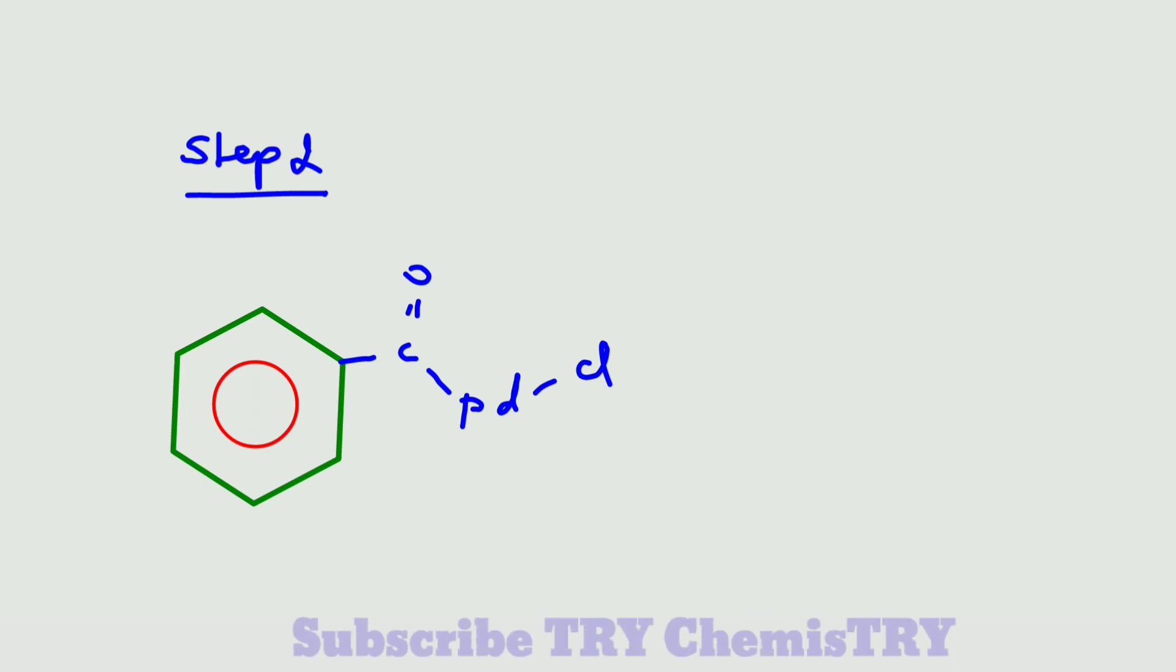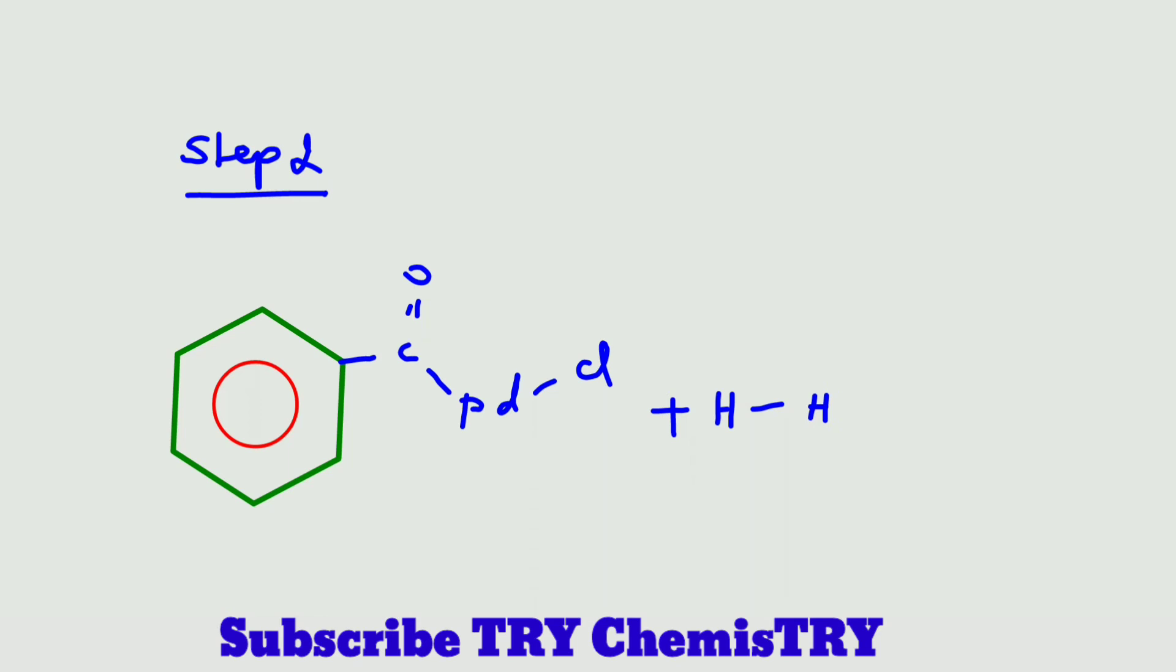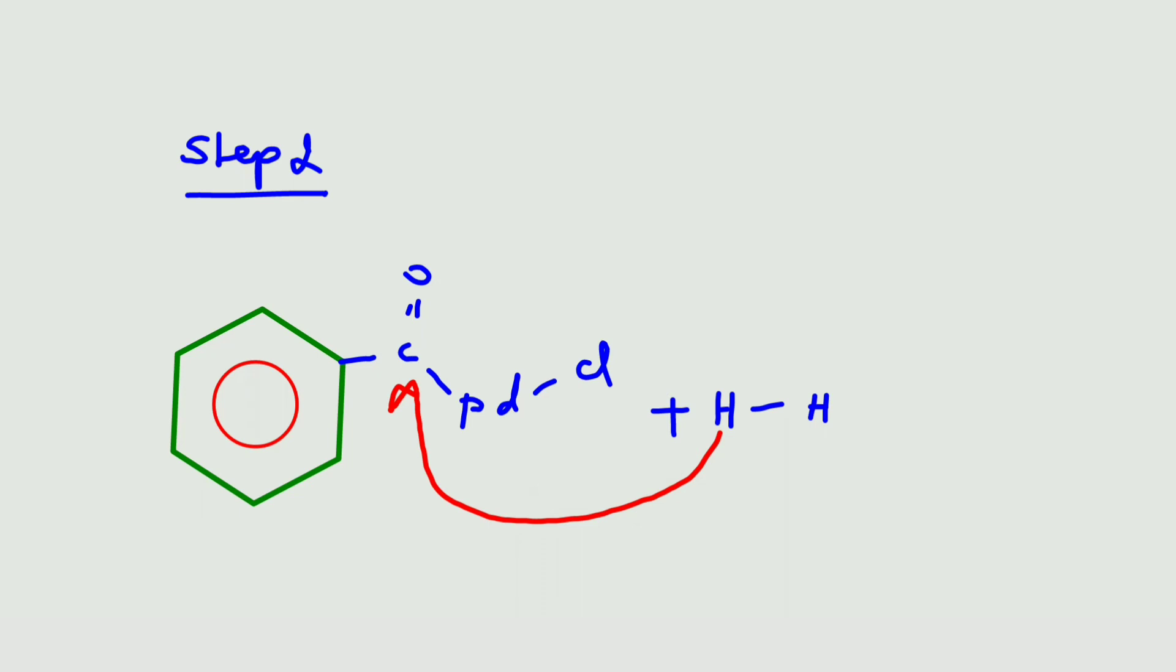Here we can reduce this compound by adding hydrogen, and here one of the hydrogen atoms attacks the carbonyl carbon. What happened? The bond between the carbon and palladium will break. And similarly, here this Cl reacts with another hydrogen.